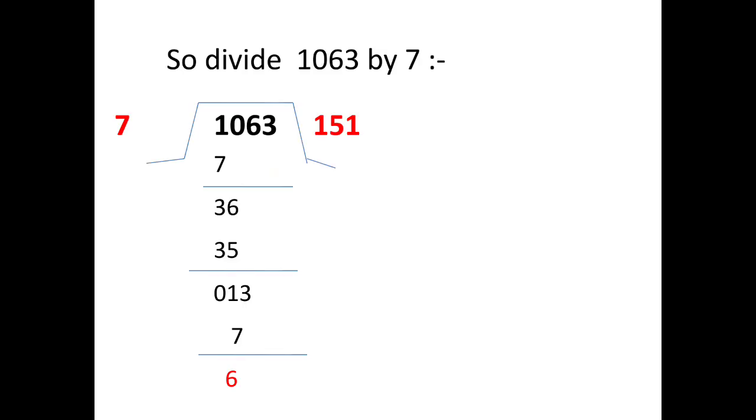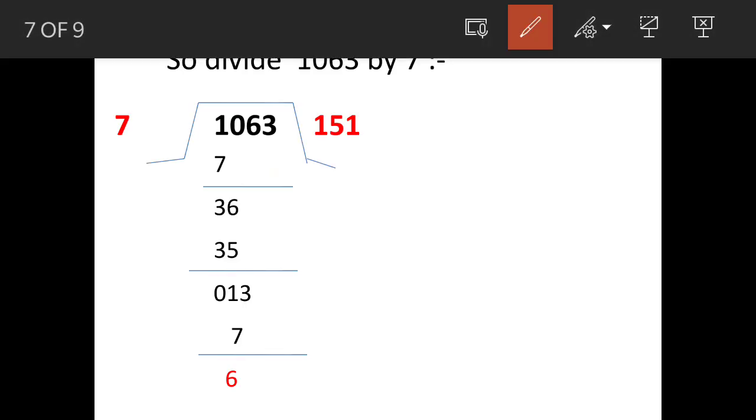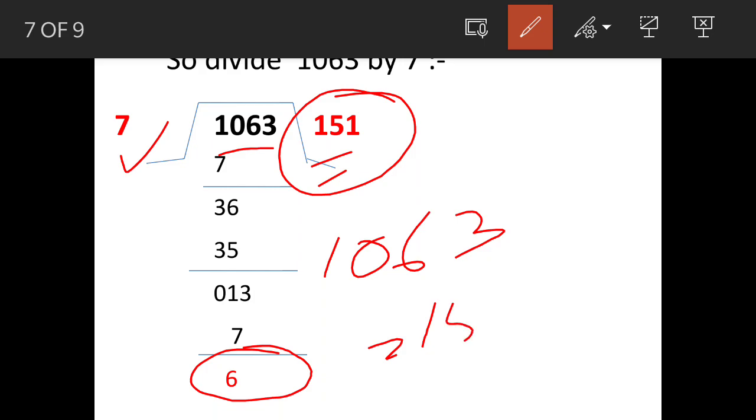Now how to split up 1063? One method is by trial and error. The other one is we follow a method: we will divide 1063 by 7 because the question is about divisibility by 7. So when we divide 1063 by 7, we get 6 as remainder and the quotient we get is 151. So that means you can write 1063 as equal to 151 times 7 plus 6.